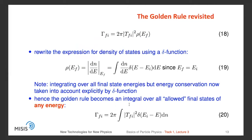We can now rewrite the expression for density of states using this delta function. In this case, dn/dE at the final energy equals this expression since the final energy equals the initial energy. Note that here we integrate over all final state energies, but energy conservation is taken into account explicitly by the delta function in the integral. Therefore the golden rule becomes an integral over all allowed final states of any energy.